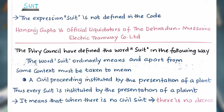The next phrase mentioned in the section on decree is 'suit.' The expression 'suit' is not defined in the code. In the case of Hansraj Gupta v. Official Liquidators of the Dehradun Mussoorie Electric Tramway Company Limited, the Privy Council defined the word 'suit' as follows: the word suit ordinarily means, and apart from some context must be taken to mean, a civil proceeding instituted by the presentation of a plaint. Thus, every suit is instituted by the presentation of a plaint, meaning where there is no civil suit, there will be no decree.